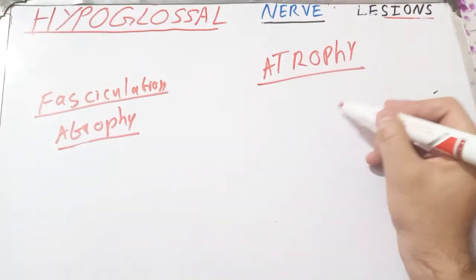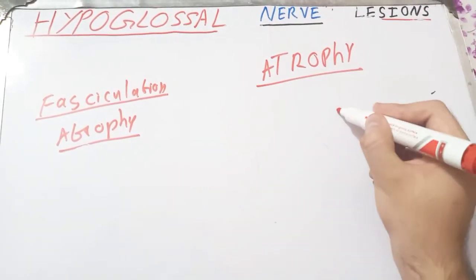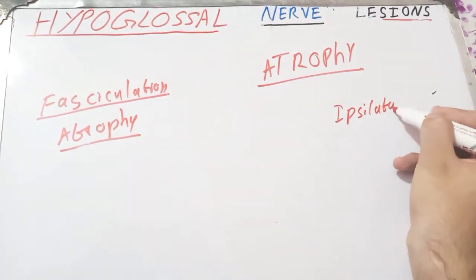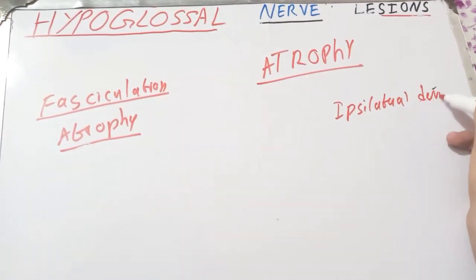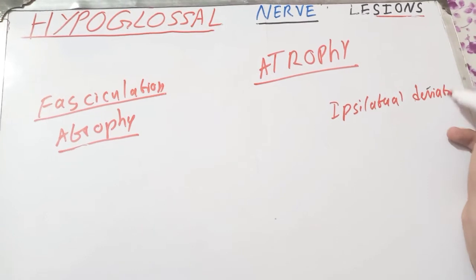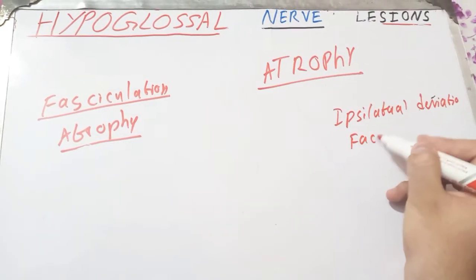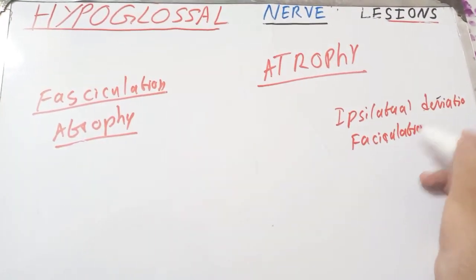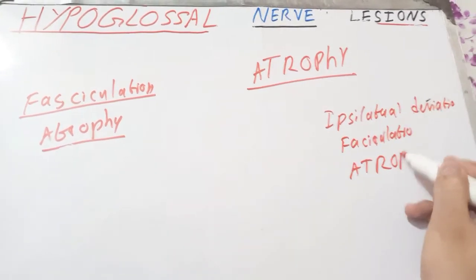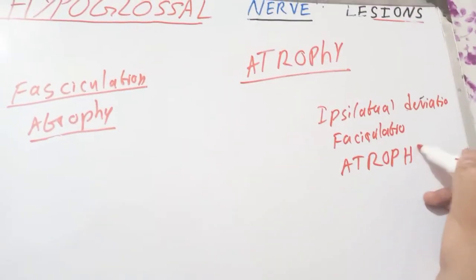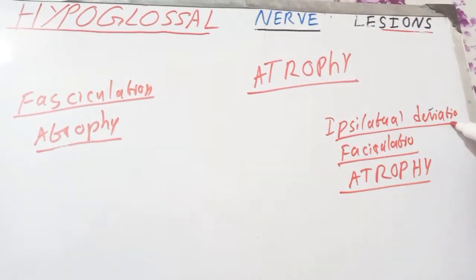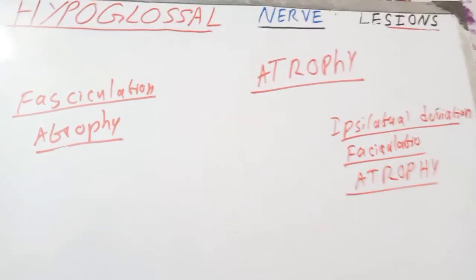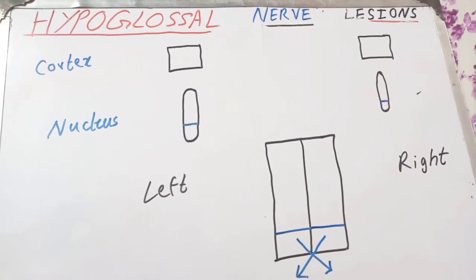So the three characteristics of lower motor neuron lesions of the hypoglossal nerve are: ipsilateral deviation of the tongue, muscle fasciculation, and muscle atrophy.